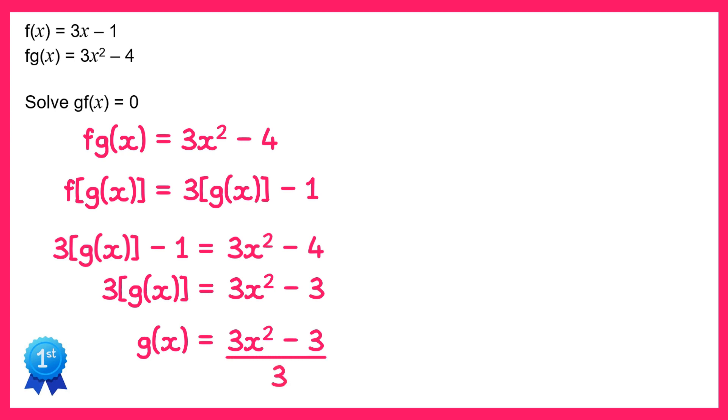There's a common factor of 3 here so we could divide by 3 for all terms and we end up with x squared minus 1. So we now know the function g.